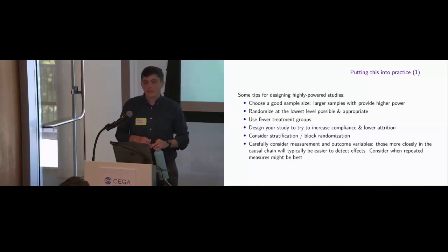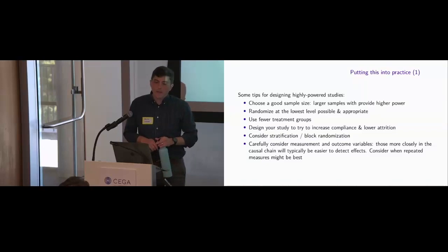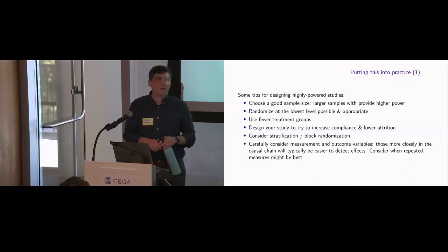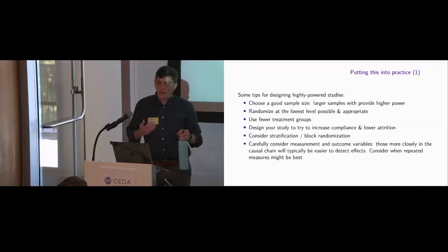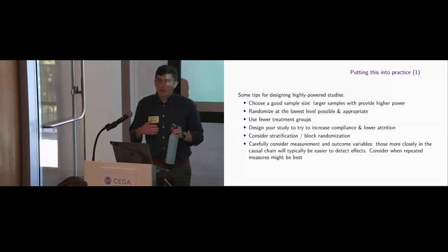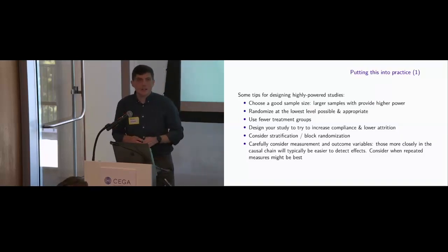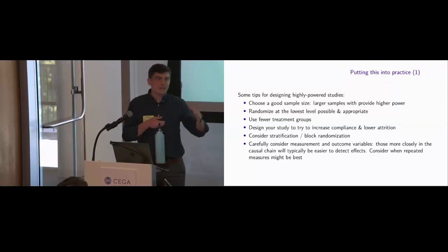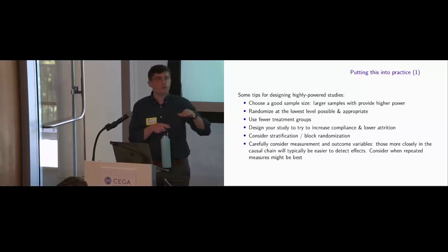Also consider stratification or block randomization: if you have baseline data and can identify characteristics that cause variation in treatment effects, this can help you test for heterogeneity and reduce residual variance. Carefully consider measurement and outcome variables — if there are many steps in the causal chain to the outcome you care about, you may have smaller detectable effects. Target the most proximate outcome: for a vaccination promotion intervention, look at vaccination status directly rather than a more distal health outcome.